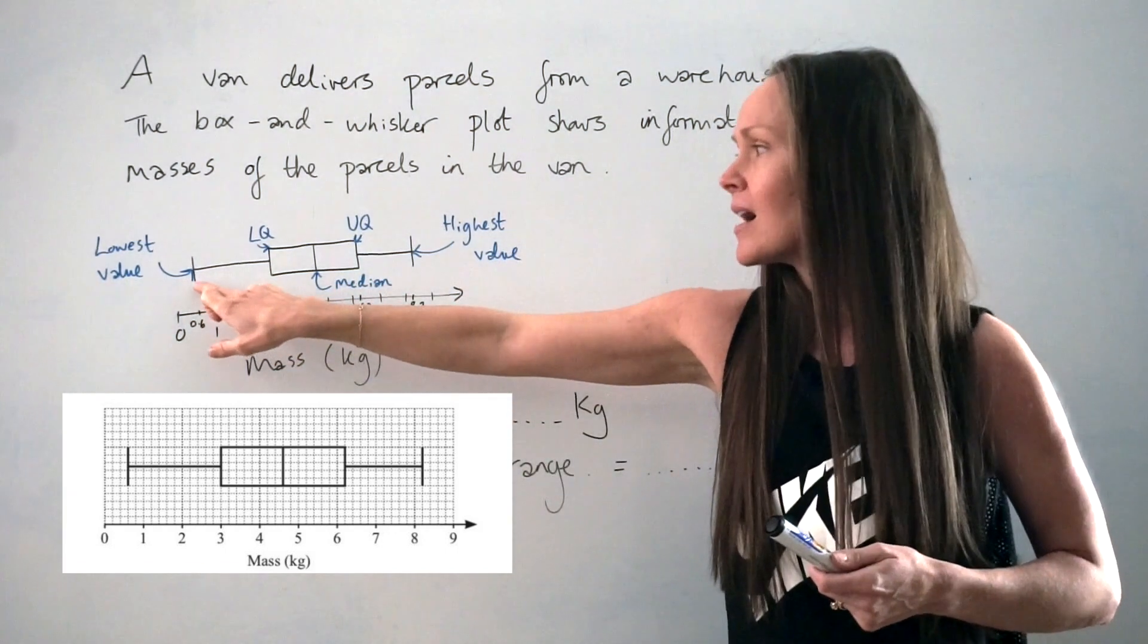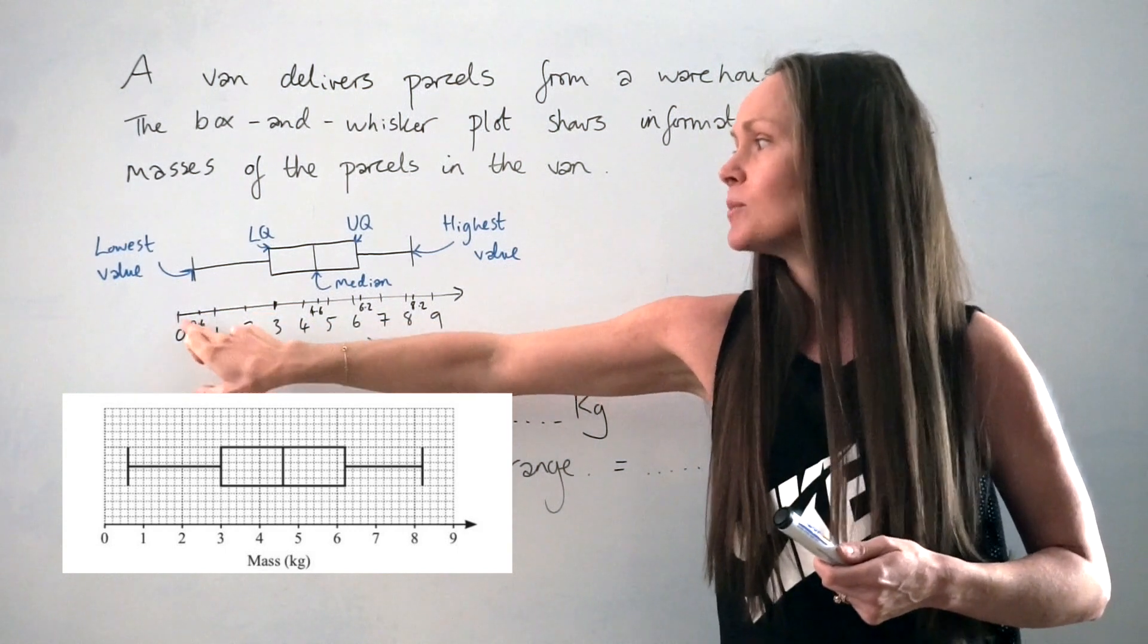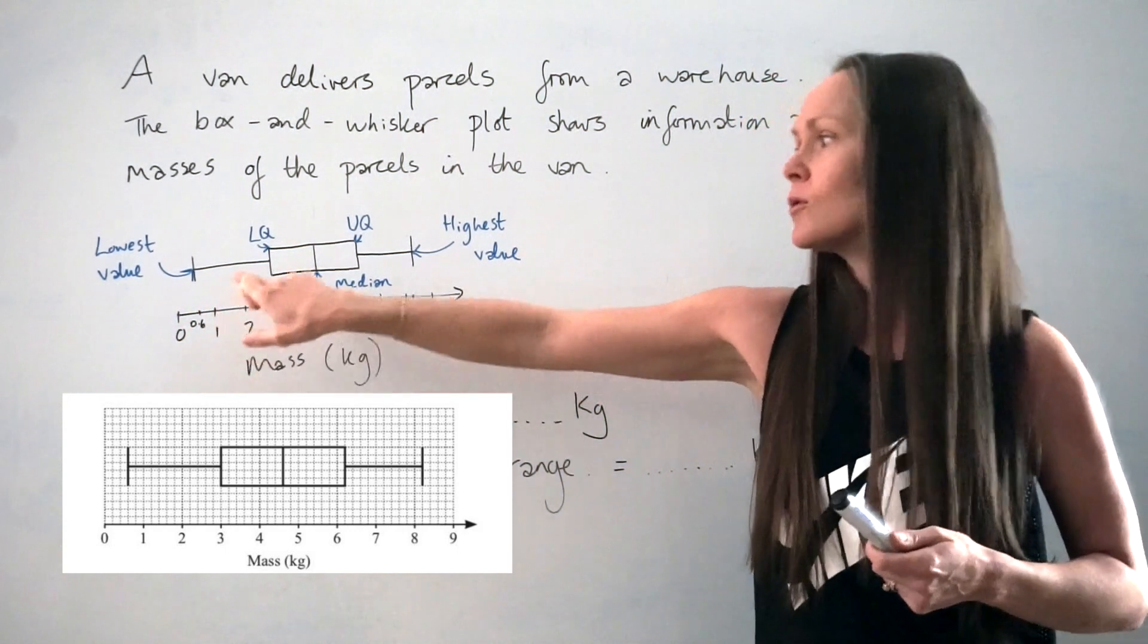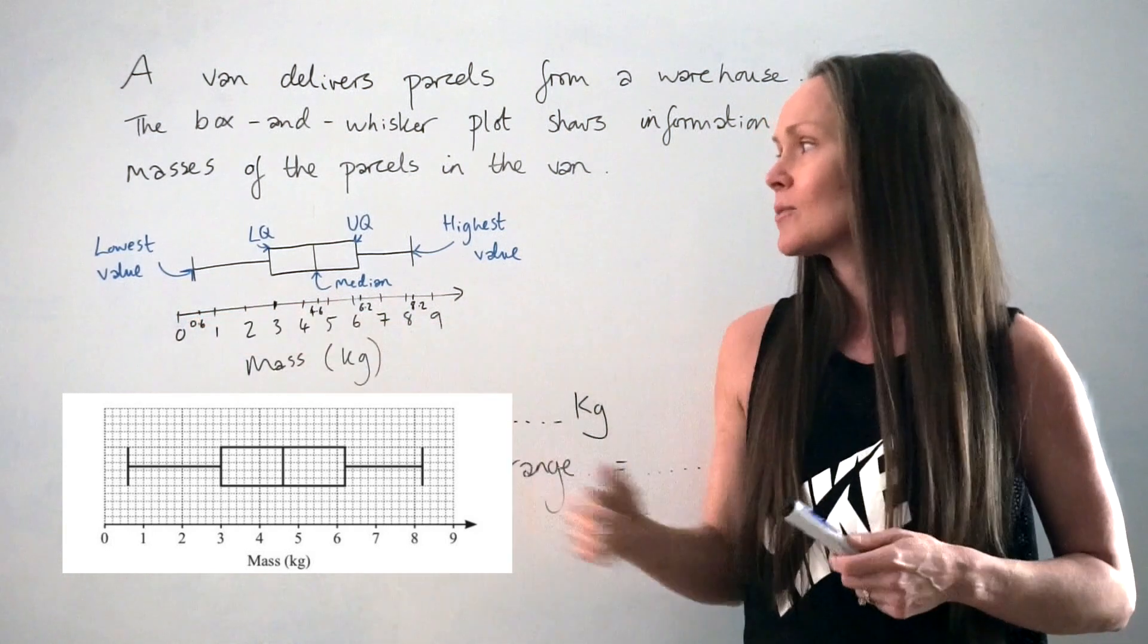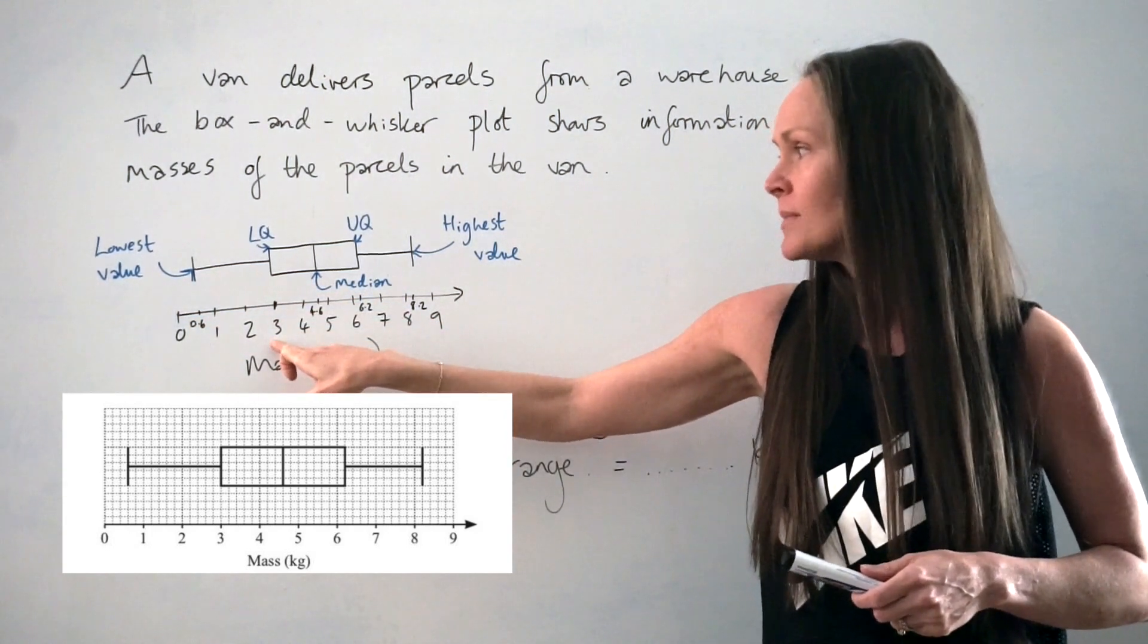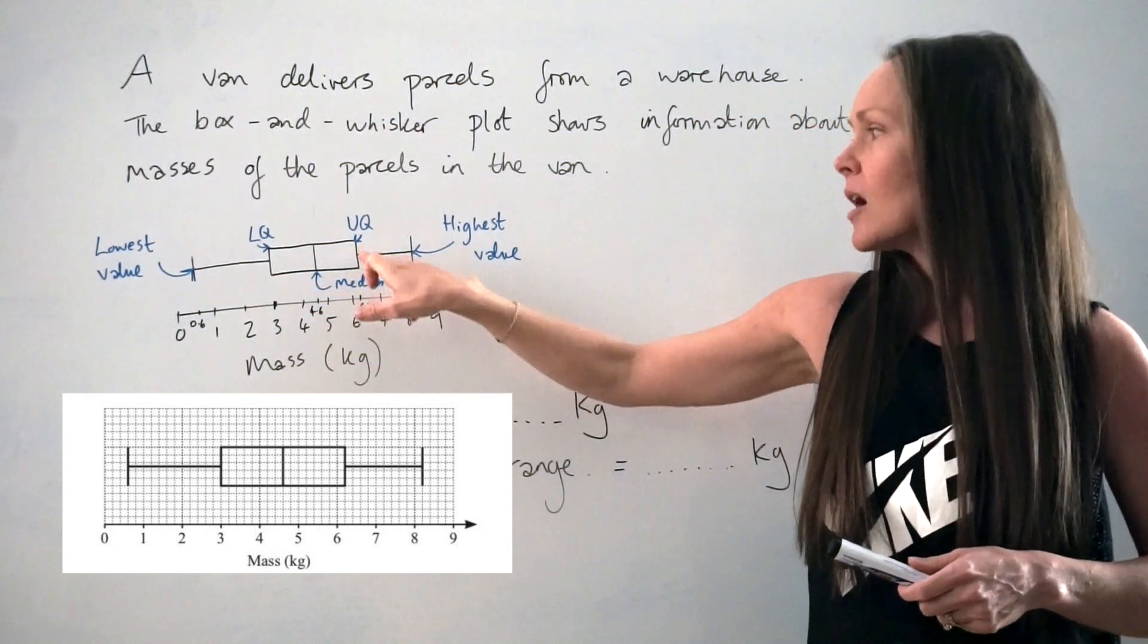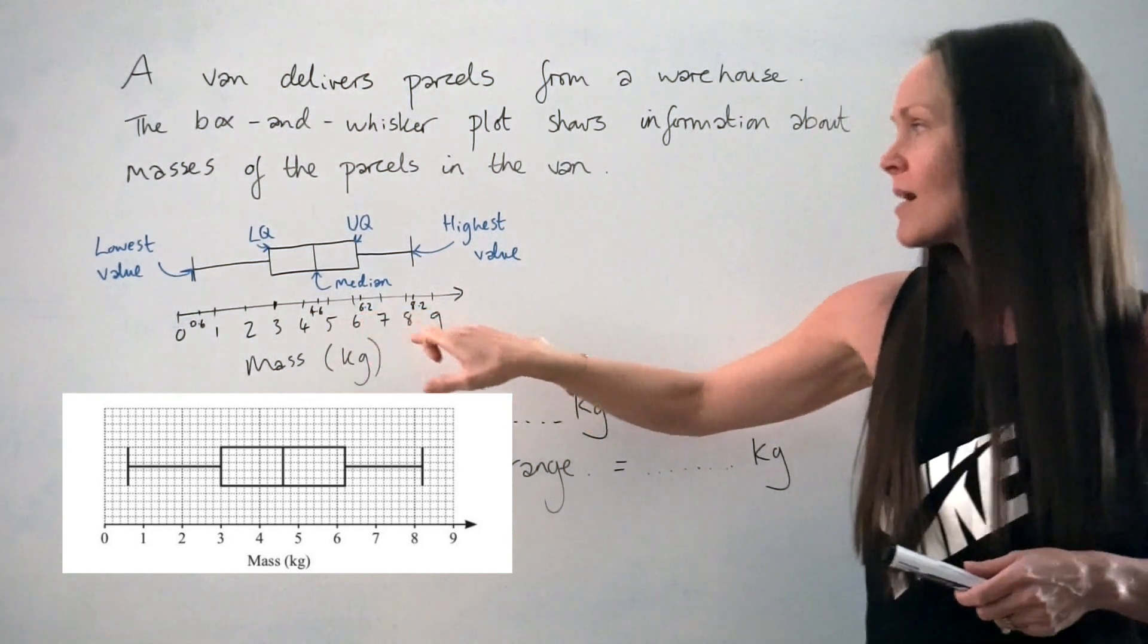If this line is three little squares along, I know it's 0.6 because 0.2, 0.4, 0.6 is three little squares. The lower quartile is in line with three kilograms. The median is in line with 4.6 kilograms. The upper quartile is in line with 6.2 kilograms.